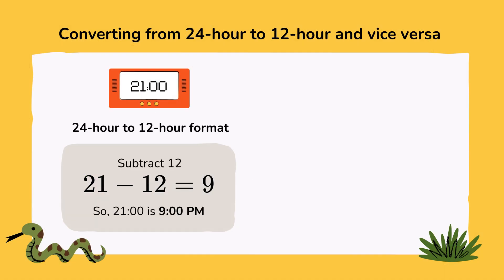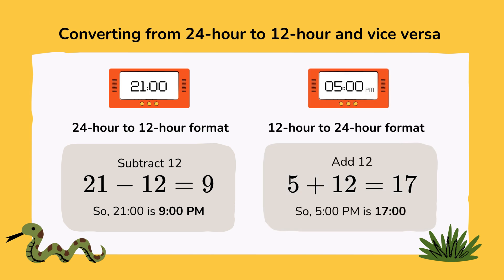Converting from 24 hour to 12 hour and vice versa: 21 o'clock — subtract 12. 21 minus 12 equals 9, so 21 o'clock is 9 PM. For 5 PM — add 12. 5 plus 12 equals 17, so 5 PM is 17 o'clock.